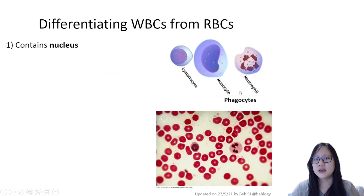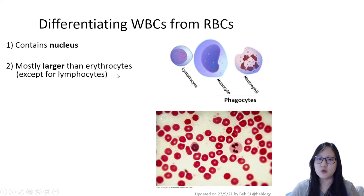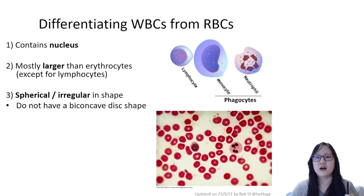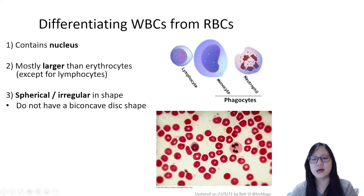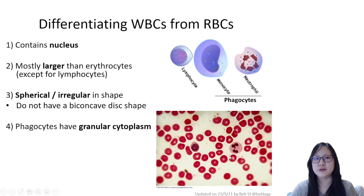To differentiate white blood cells from red blood cells: white blood cells have a nucleus whereas red blood cells do not. White blood cells are mostly larger than erythrocytes, except lymphocytes which are about the same size. White blood cells are spherical or irregular in shape, whereas red blood cells are biconcave. Phagocytes have granular cytoplasm; lymphocytes do not; and red blood cells definitely do not.